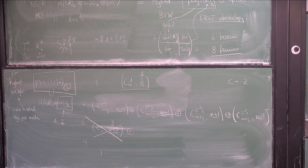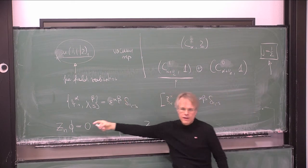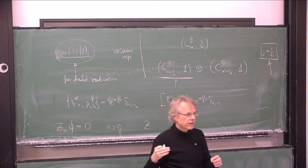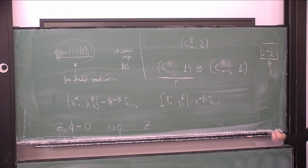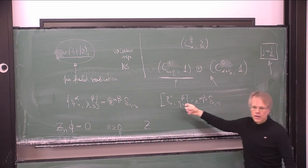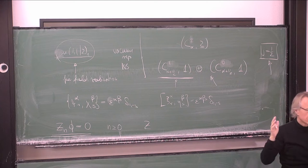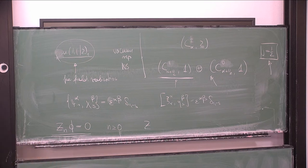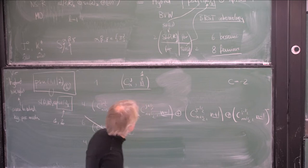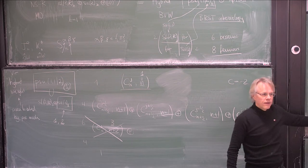The details will be discussed in the exercise session this afternoon — on the example sheet all the relations are written down and you can check them, and the exercise will show how to reproduce this representation from the free field realization. In the Neveu-Schwarz sector everybody is half-integer moded, and if you take everybody integer-moded you get this representation. That is basically the only representation the algebra has, and you get it once you insist that a certain U1 charge is equal to zero, which fixes the spin to be a half.